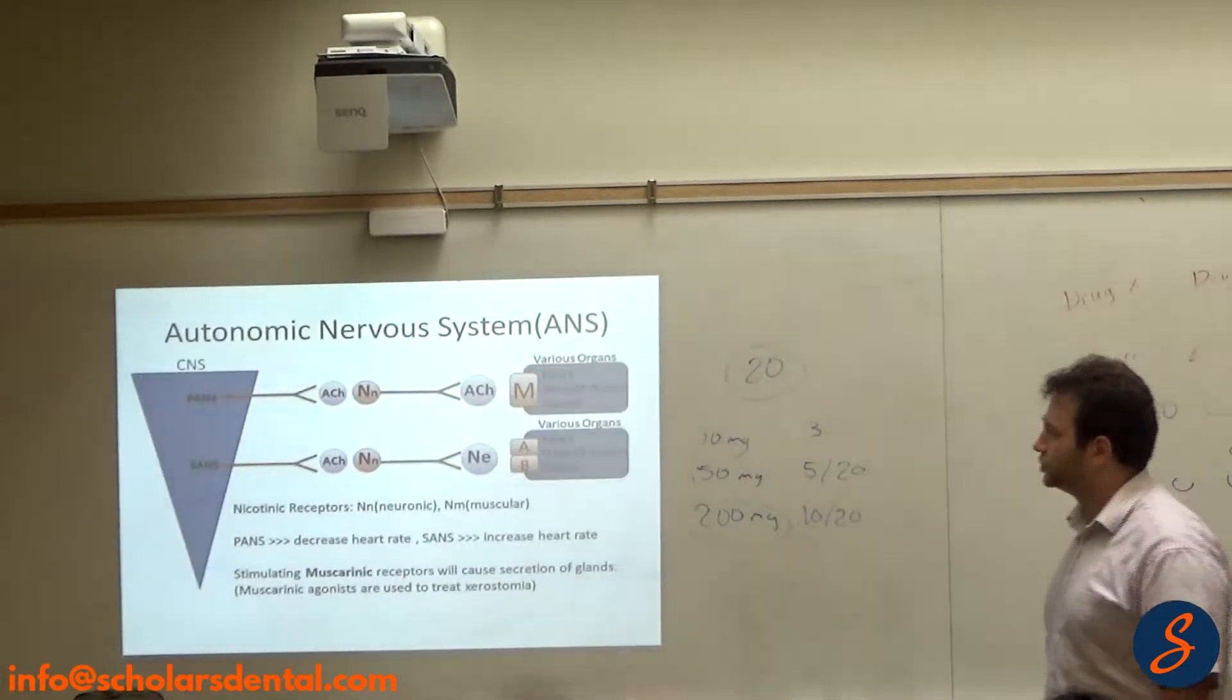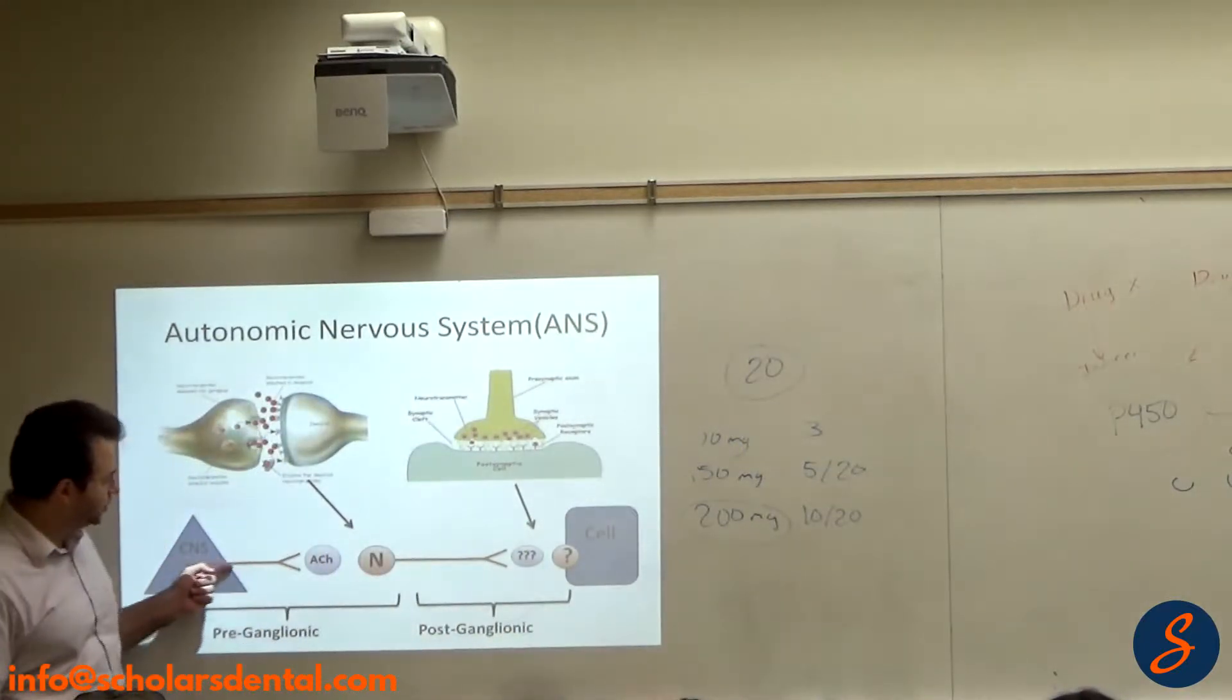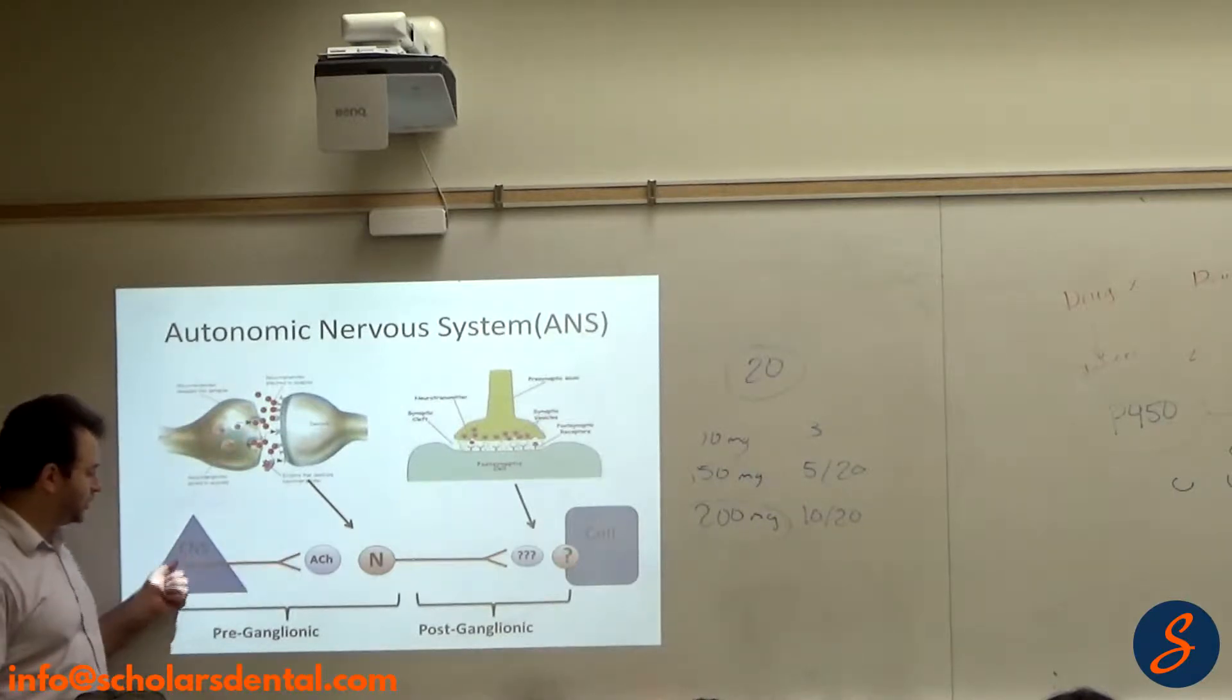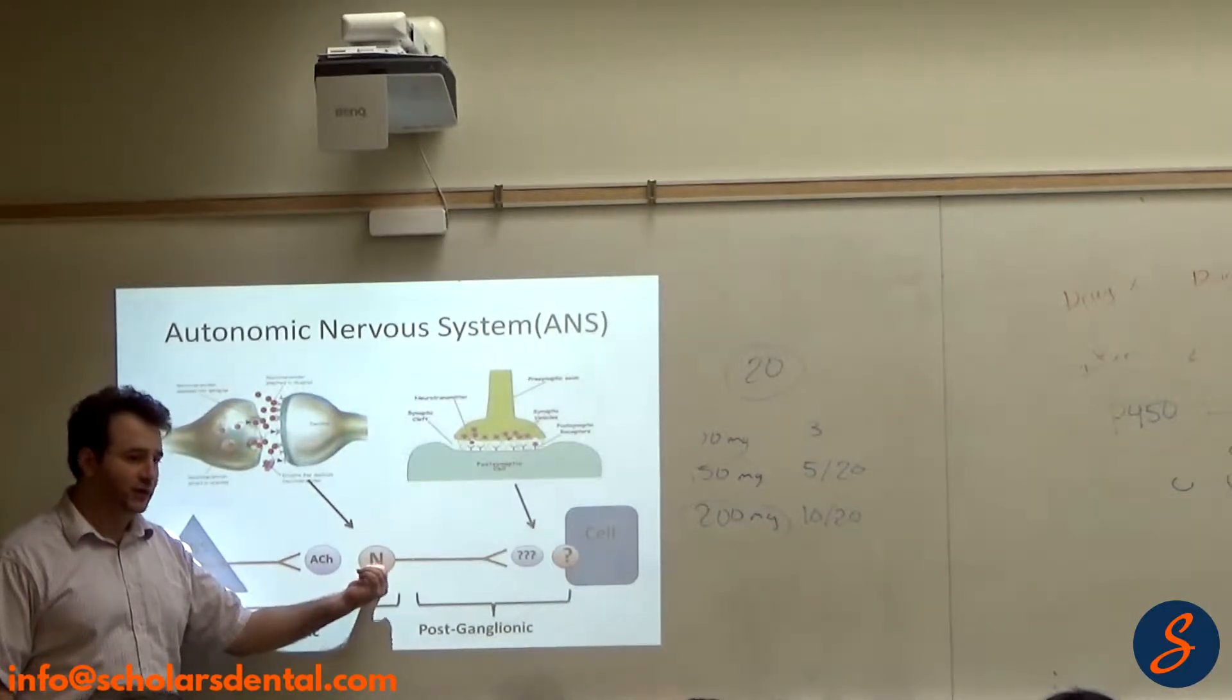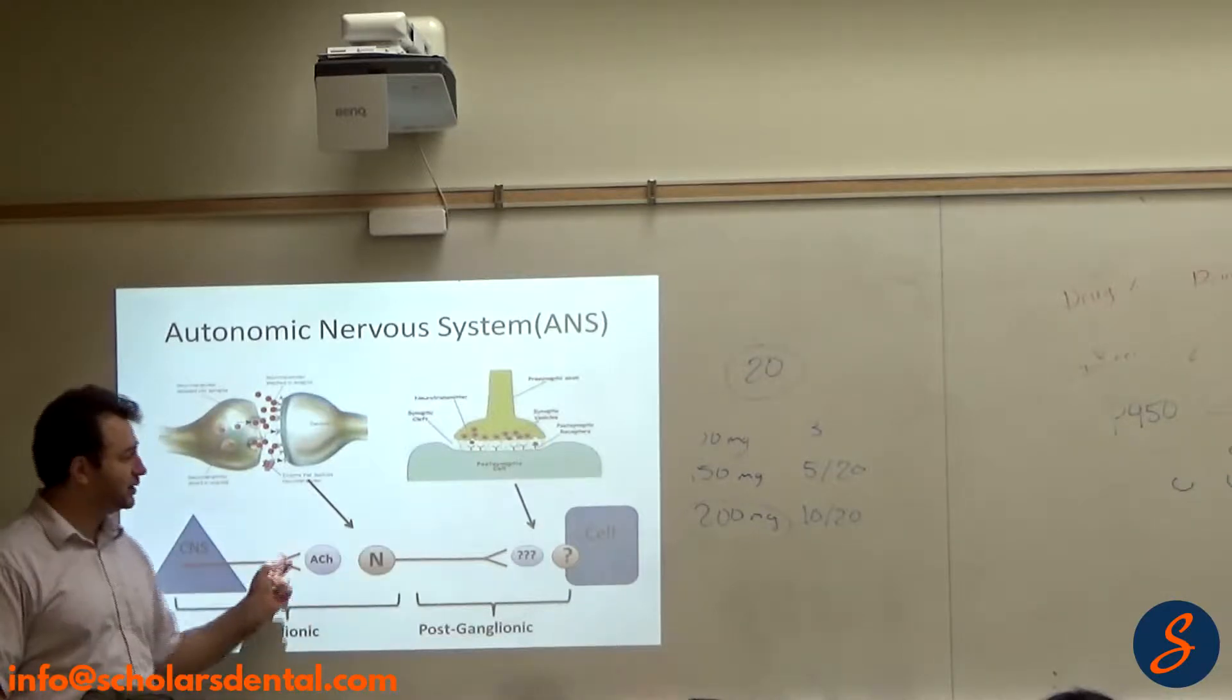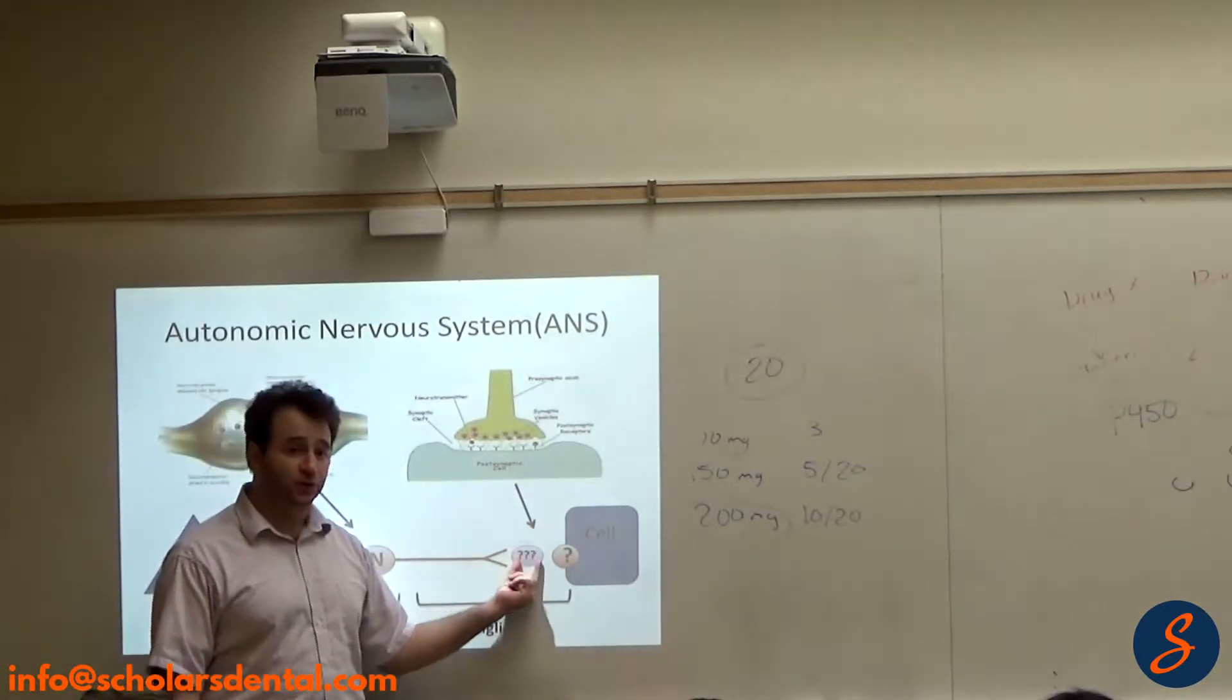We talked about this chart. The CNS will give order to the cell, so the transmission will go through a neuron. Then it'll release acetylcholine, and the receptor here will be nicotinic. This is called ganglion. Then the action potential will continue and release the neurotransmitter.